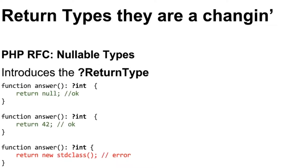Basically, if you look at the code, you'll see a question mark. This introduces the question mark return type. So you can say question mark int — that means you can return an int or you can return null. So null is fine. 42 is fine. stdClass is not fine — horrible things will happen if you try to break this. If you return anything else, bad things will happen: it will actually throw a type error, which you can catch in your class. The question mark is the important part: question mark int means null or int, but nothing else.